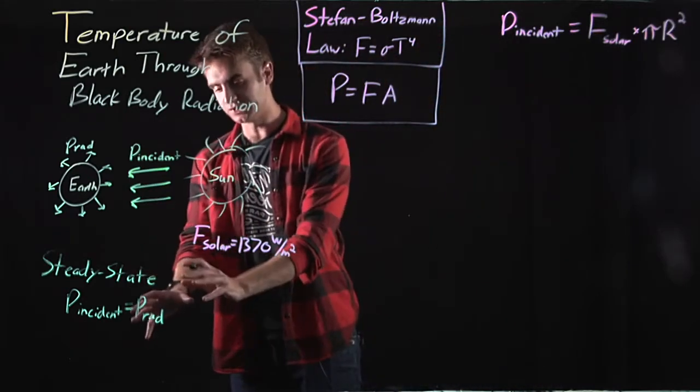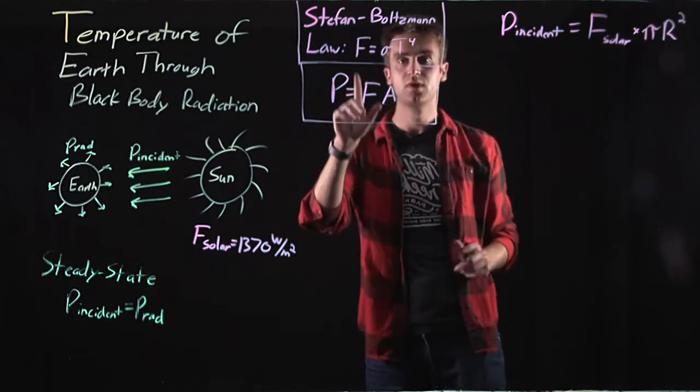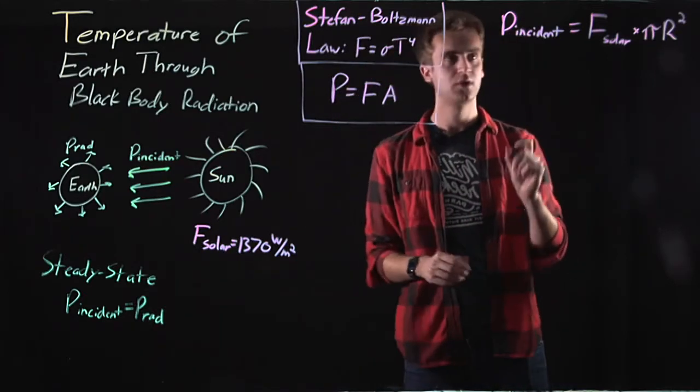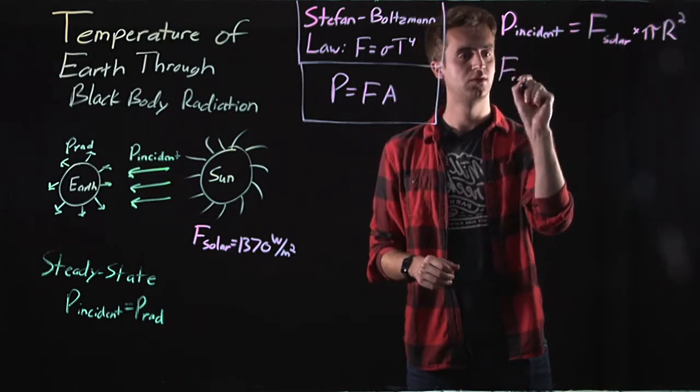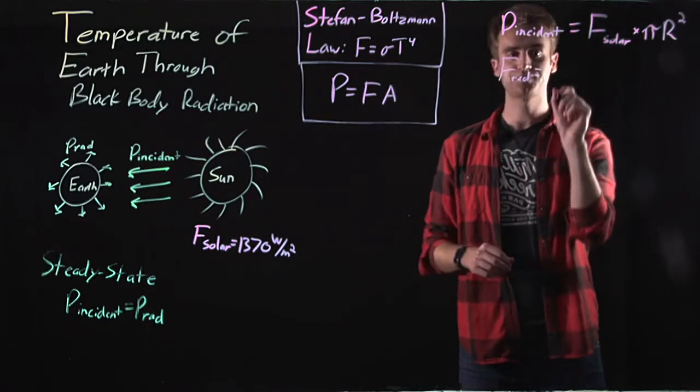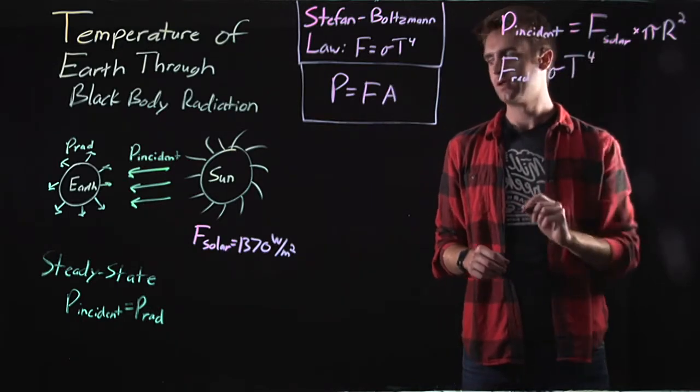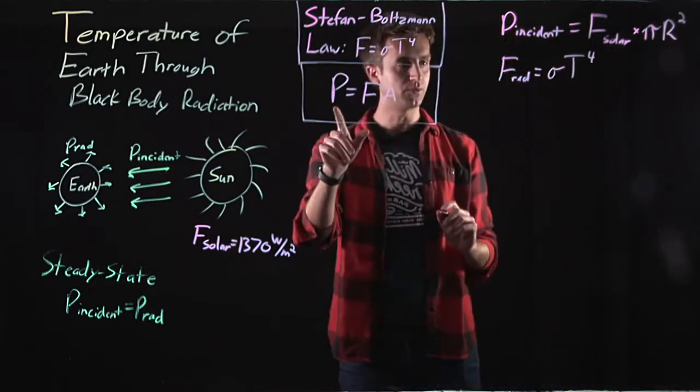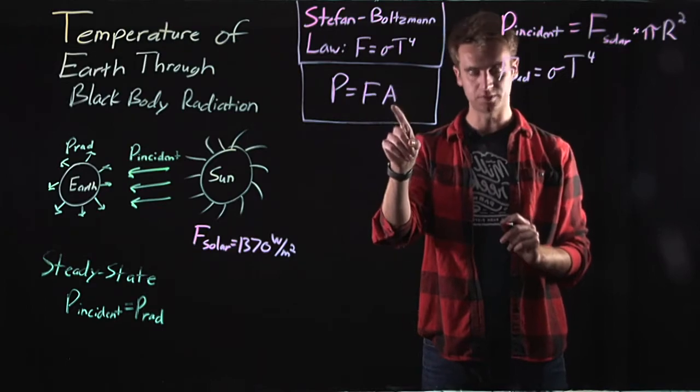What about P radiation? So let's come back up here to the Stefan-Boltzmann law. What is the radiative flux? Well, the radiative flux must be equal to the Stefan-Boltzmann law, sigma T fourth. And so the radiative power must be equal to this flux times some area term.